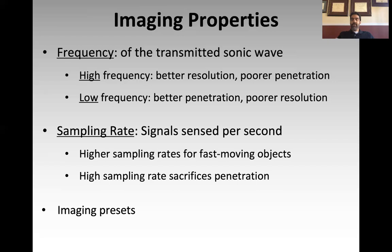The opposite is true with the cardiac setting. If you turn on the cardiac setting, it shifts the frequency higher and increases the sampling rate, giving you the ability to look at the heart — a relatively superficial, fast-moving structure — with high resolution. But if you try to look at the abdominal aorta using the cardiac setting, it won't look so good. That's how frequency and sampling rate modify your ability to optimize imaging of various structures.